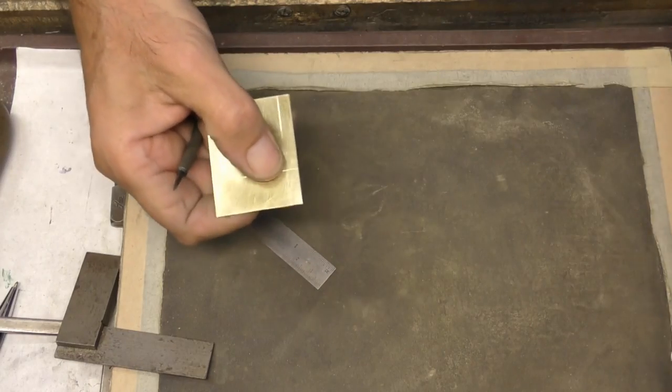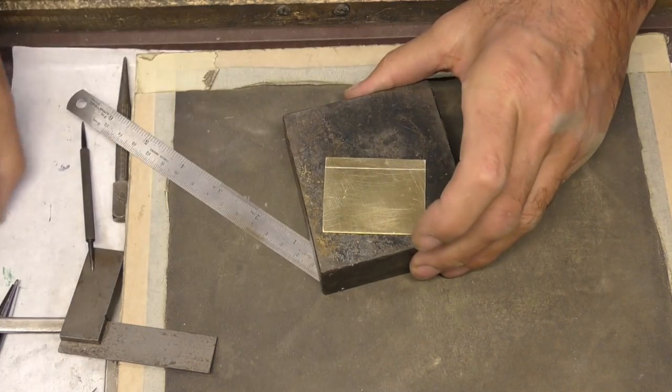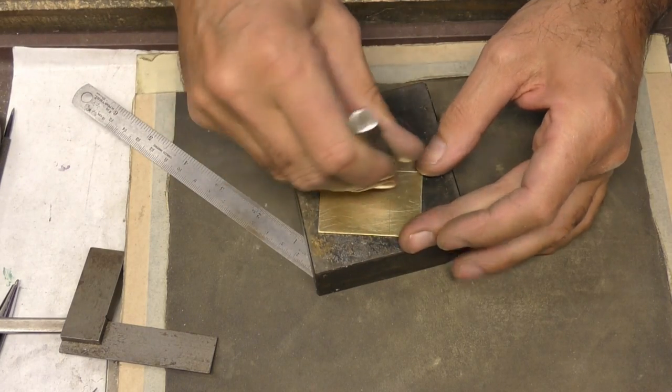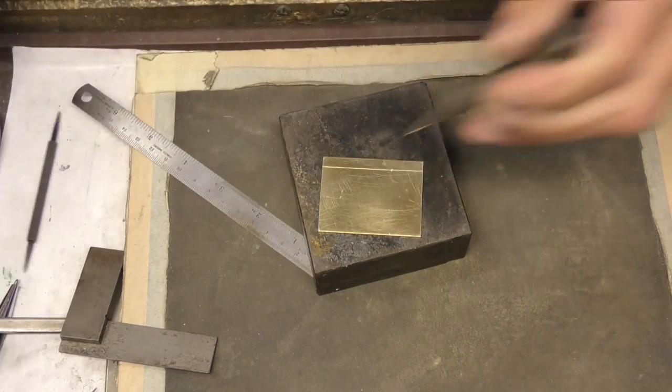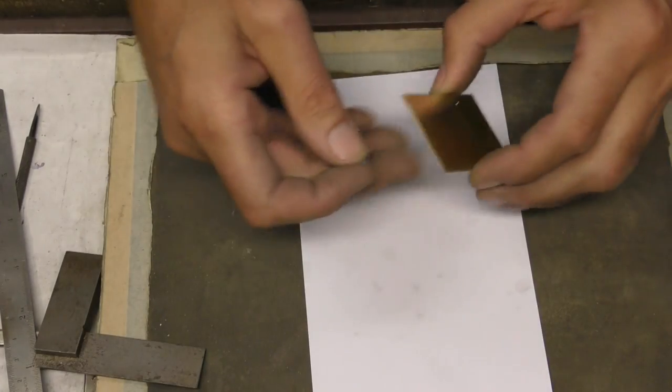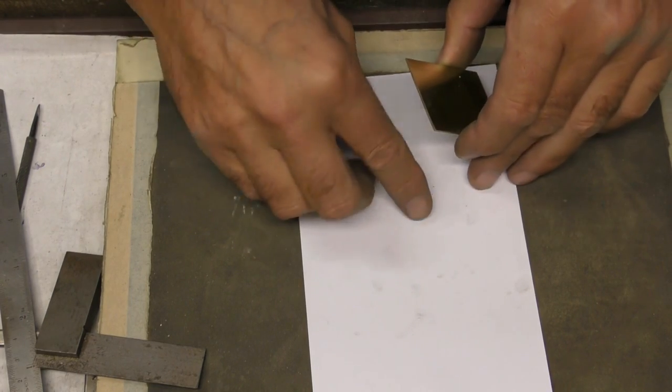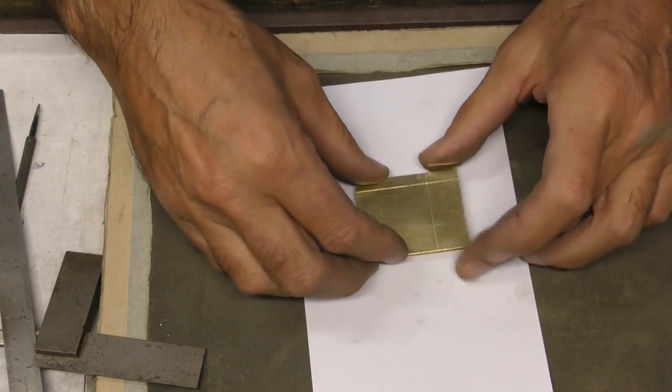Now we're going to center punch the cross mark there. Always center punch with a steel background otherwise if you use wood it will dent the metal. I'm using a paper background now and a little bit of blue tack to stop the piece moving around.